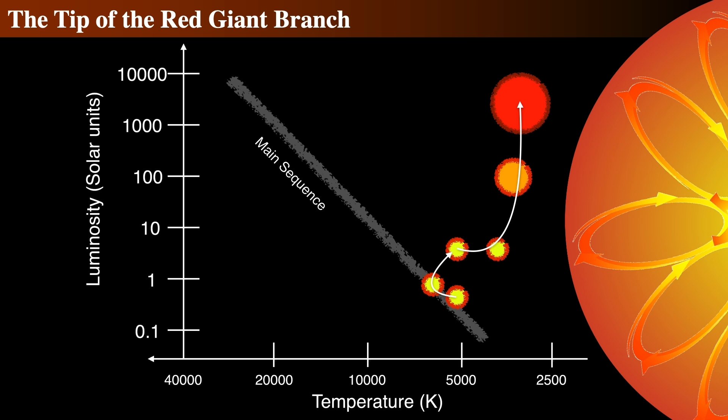Down in the core, at the tip of the red giant branch, the central temperature and density have become about 10 to the 8th Kelvin, and about 7.7 times 10 to the 6th kilograms per cubic meter. This is now high enough that quantum mechanical tunneling through the Coulomb barrier between helium-4 nuclei becomes effective, allowing the triple alpha process to begin.